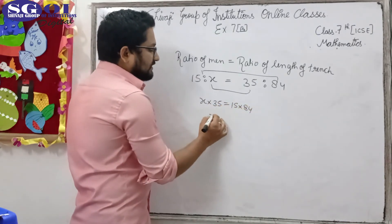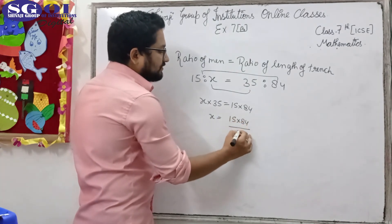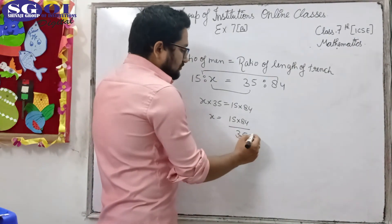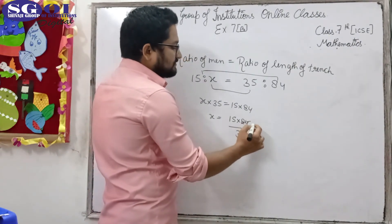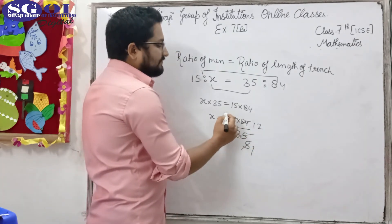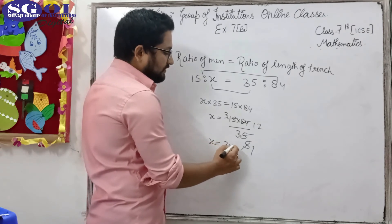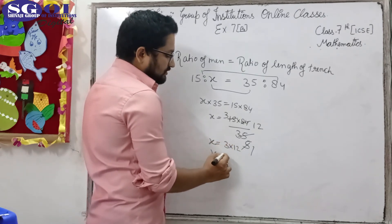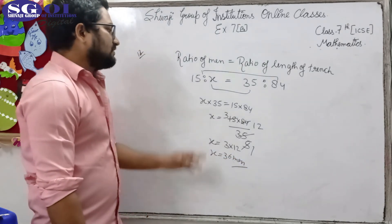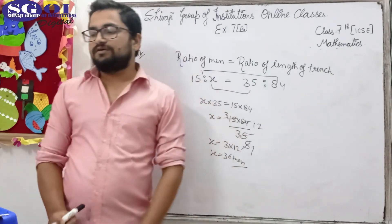So x equals 15 × 84 upon 35. We divide 35 and 84 by 7, giving 5 and 12. Then 15 divided by 5 gives 3. So x equals 3 × 12, which is 36. Therefore 36 men can dig a trench 84 metres long.